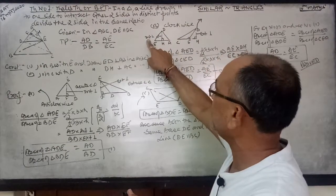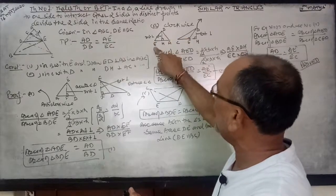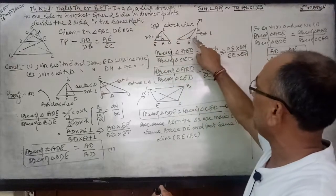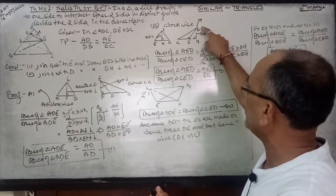So now DH will work as an internal perpendicular for this AED, and this CE will be base. And D will go up. DH is working as external perpendicular.